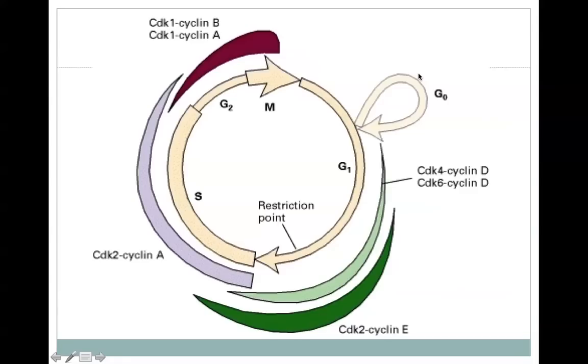These cells are not dividing. They are just simply doing their job. If they are a muscle cell, they are actively contracting. If they are a nerve cell, they are conducting the nerve impulses. They are not going through the cell cycle. But you can see that since this G0 kind of loops back, it is possible for cells to go from G0 back into the cell cycle.